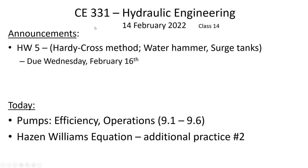The homework assignment you've got right now includes the Hardy Cross method. We've been through an example in class where you were solving for the flow rates using Hardy Cross, and we went through the process of calculating the pressure at junctions. The homework is a little bit different in that I've given you elevations, so when you calculate the pressure at each junction, you'll have to take into account the elevation and not just the total head. We also talked on Friday about Water Hammer and how surge tanks can be used to reduce the risk of damage from Water Hammer.